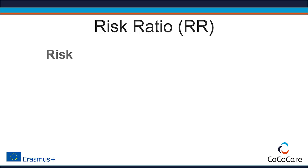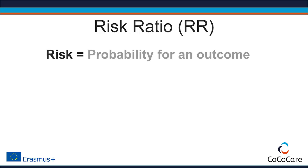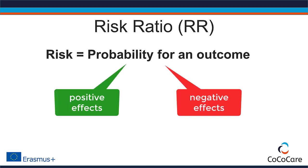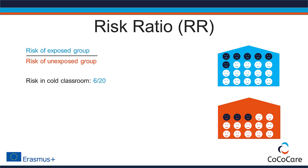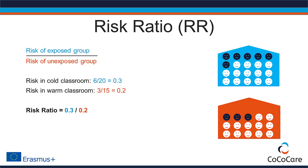In studies, the word 'risk' can sometimes be misleading — it means the probability for an outcome and can be used for both positive and negative effects. Now, let's use the example of the two classrooms to see how the risk ratio is calculated. The risk ratio is the ratio between the risk of getting ill in the exposed group and the risk in the unexposed group. In the unheated classroom, 6 out of 20 children become ill, so the risk of getting ill is 6 out of 20, which is 0.3 or 30%. The risk of getting ill in the heated classroom is 3 out of 15, which is 0.2 or 20%. By dividing one risk by the other, you get a risk ratio of 1.5.